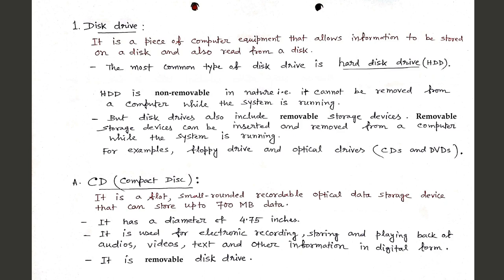The first secondary storage device is the disk drive. A disk drive is a piece of computer equipment that allows information to be stored on a disk and also read from a disk. The most common type is the hard disk drive or HDD, which is non-removable. Disk drives also include removable storage devices, such as floppy drives and optical drives like CDs and DVDs, which can be inserted and removed while the system is running.